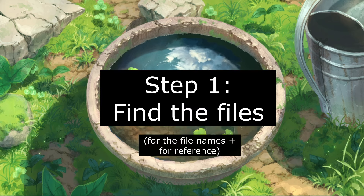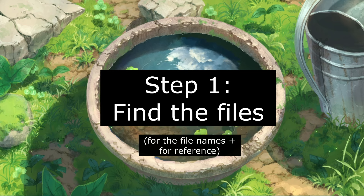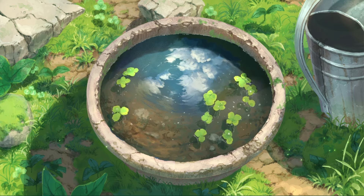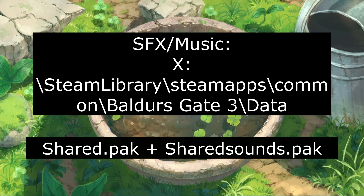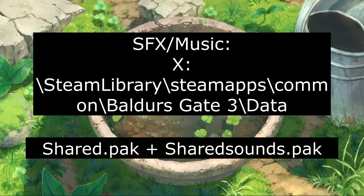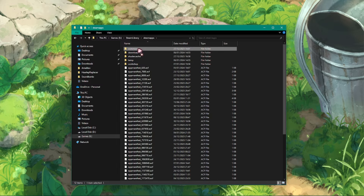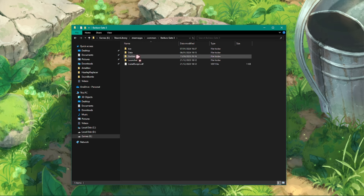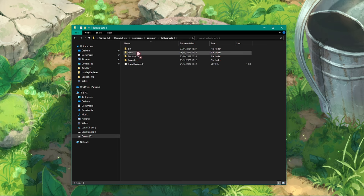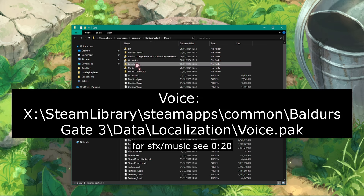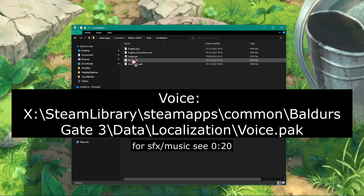Step 1: Find the audio files that we want to replace. For me, it's dialogue. For you, it might be sound effects or music. I'll be doing it with the dialogue lines. For sound effects and music, just follow along, but instead of using the voice.pack, extract these. First, we need to find all the original voice lines inside the game. They're found inside a pack file called voice.pack in this path.